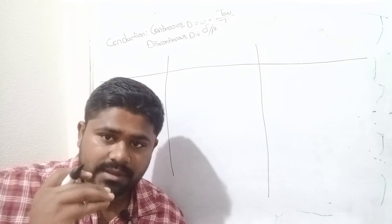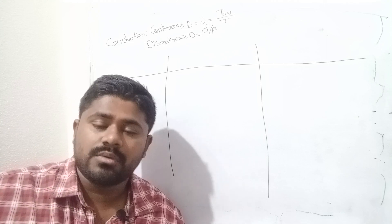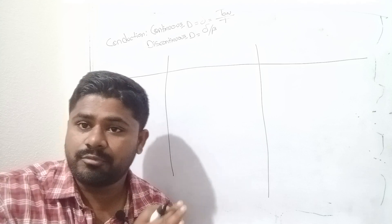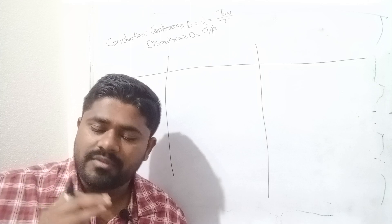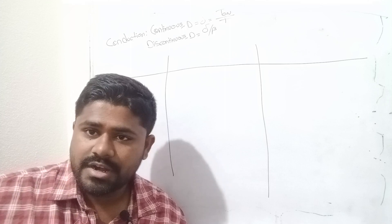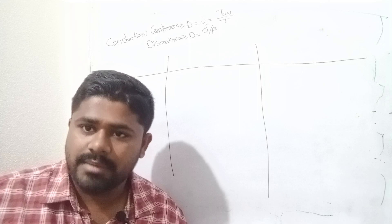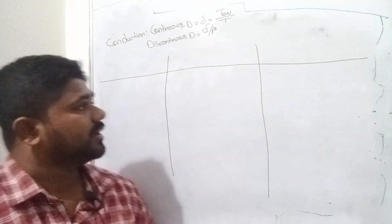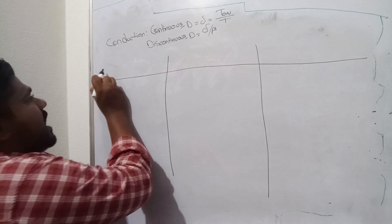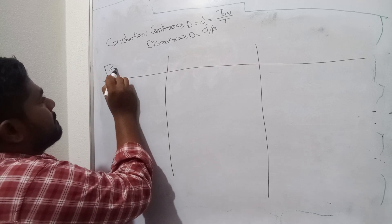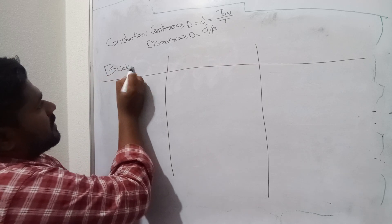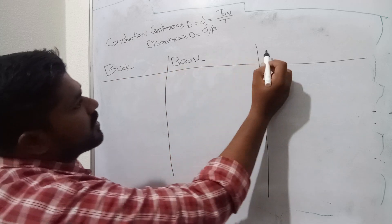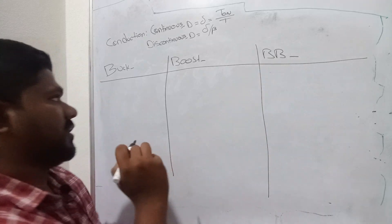For speed control we make use of buck converters, and for regenerative braking we make use of boost converters. On that basis we have buck converter, boost converter, and buck-boost converter.